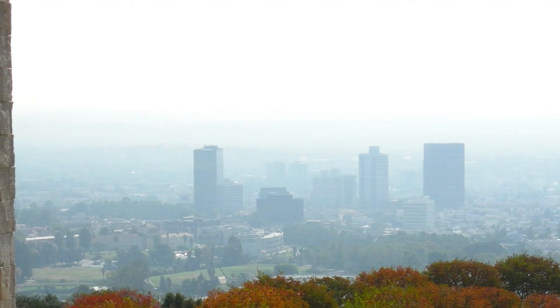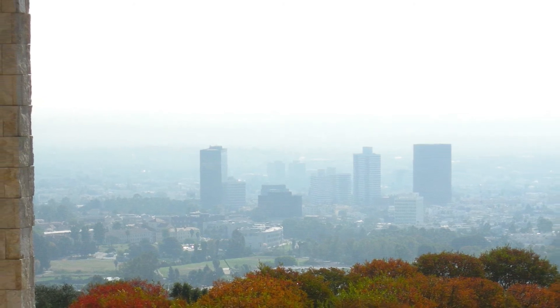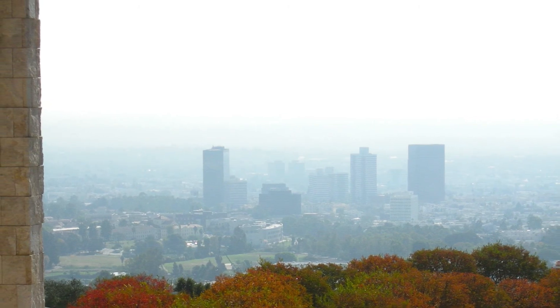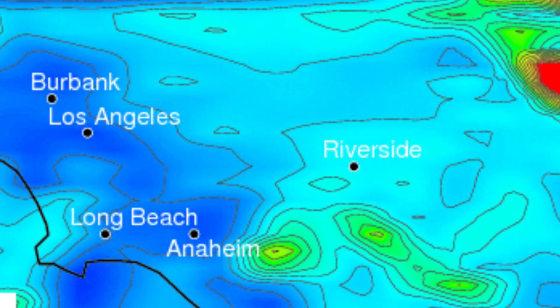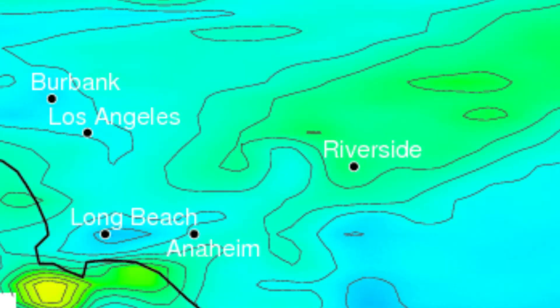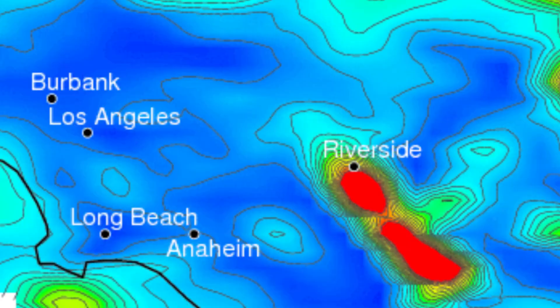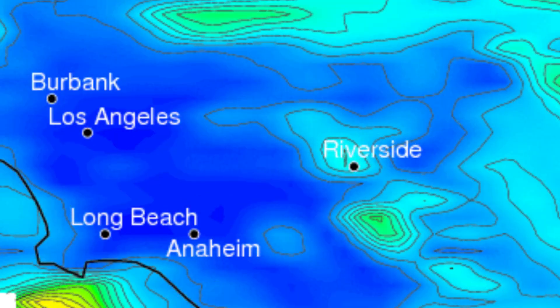This is very important because particles do have these negative health effects. And so predicting how we're going to control them really relies on the atmospheric models saying, if you start out with this much precursor, you're going to get this much particle.